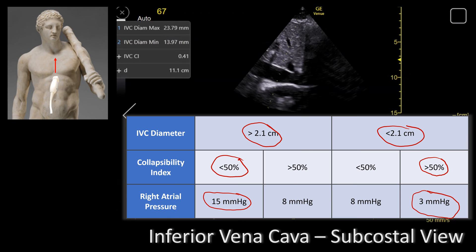Now if we have any of the other combinations — for example, if the IVC is more than 2.1 centimeters and more than 50 percent collapsible, or if the IVC is less than 2.1 centimeters and less than 50 percent collapsible — then we have an intermediate right atrial pressure of anywhere between 5 and 10 mmHg, and we take 8 mmHg as an average.